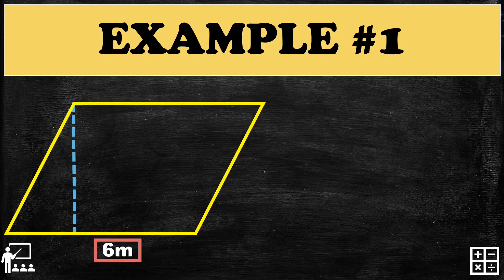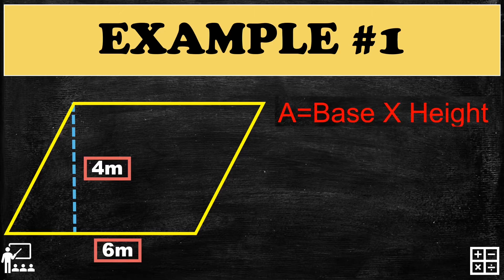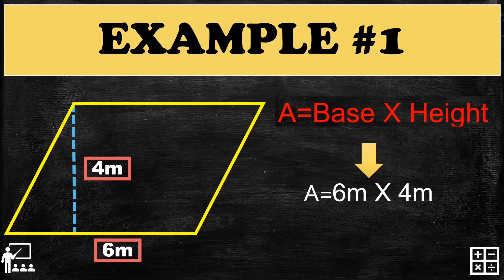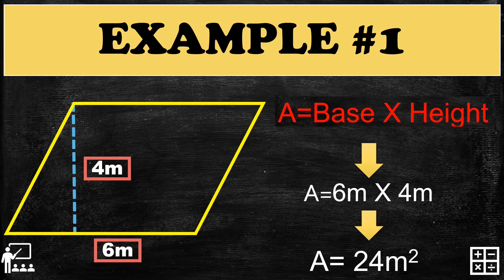Let's try Example 1. You have here a parallelogram with a base of 6 meters and a height of 4 meters. Using the formula A equals base times height, we substitute: base equals 6 meters and height equals 4 meters. Multiplying 6 times 4 gives us 24, so the area is 24 meters squared.